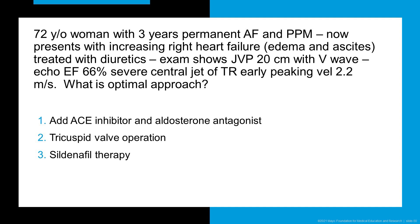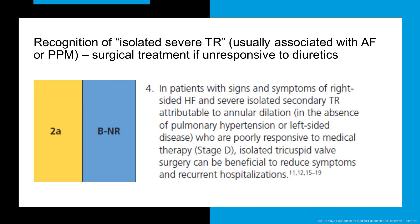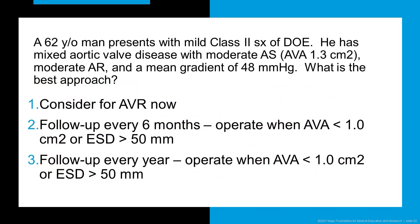For a 72-year-old woman three years after pacemaker implantation, in atrial fibrillation, with severe right heart failure, very prominent V-waves in the neck, but normal ejection fraction and normal pulmonary pressures: the guidelines now recognize isolated severe tricuspid regurgitation, usually associated with atrial fibrillation or permanent pacemaker. These patients actually respond to surgical treatment if unresponsive to diuretics.